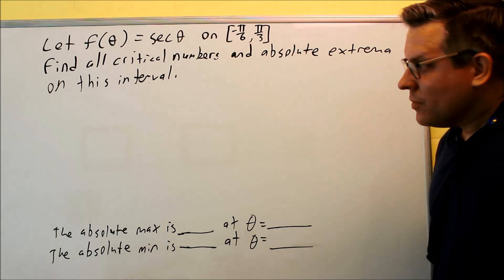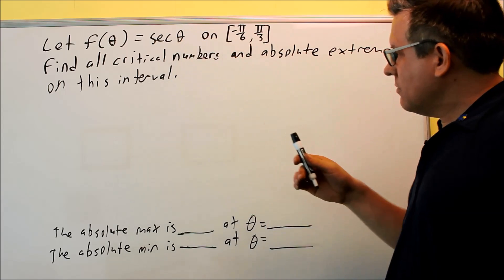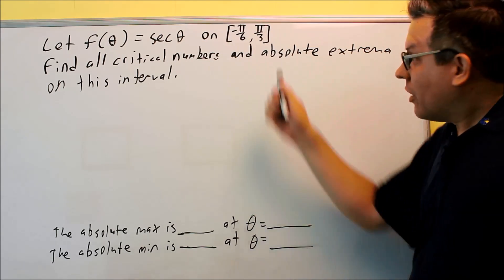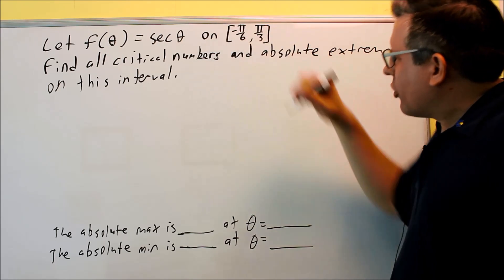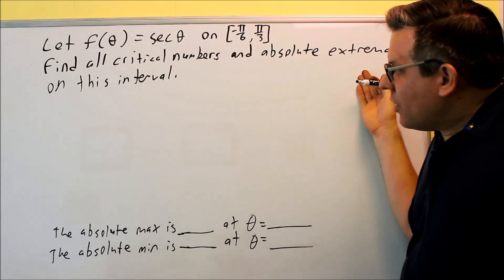Okay, it's time for some trig. Here's our original one. f of theta is secant theta, and our interval given in terms of radians. Same thing, we want to find our critical numbers and the absolute minimum and max on the interval.